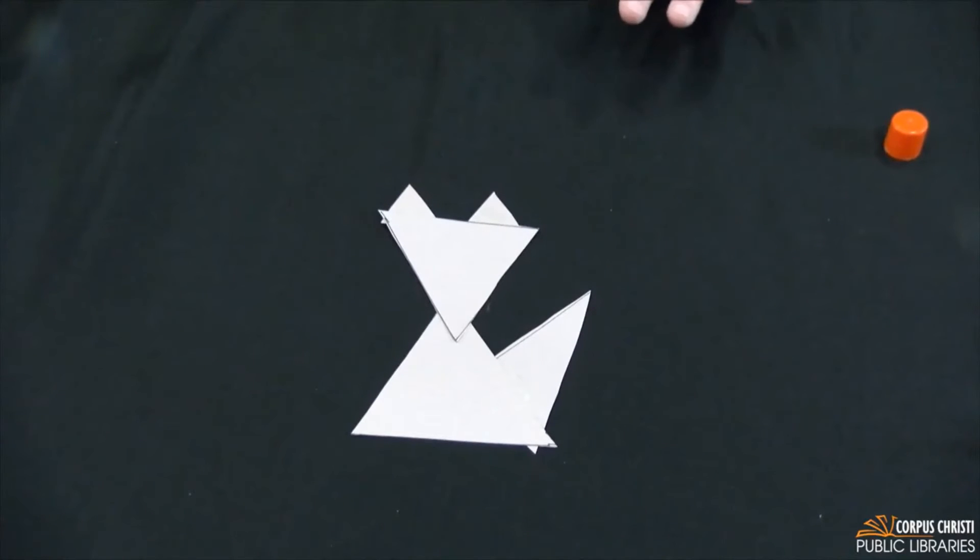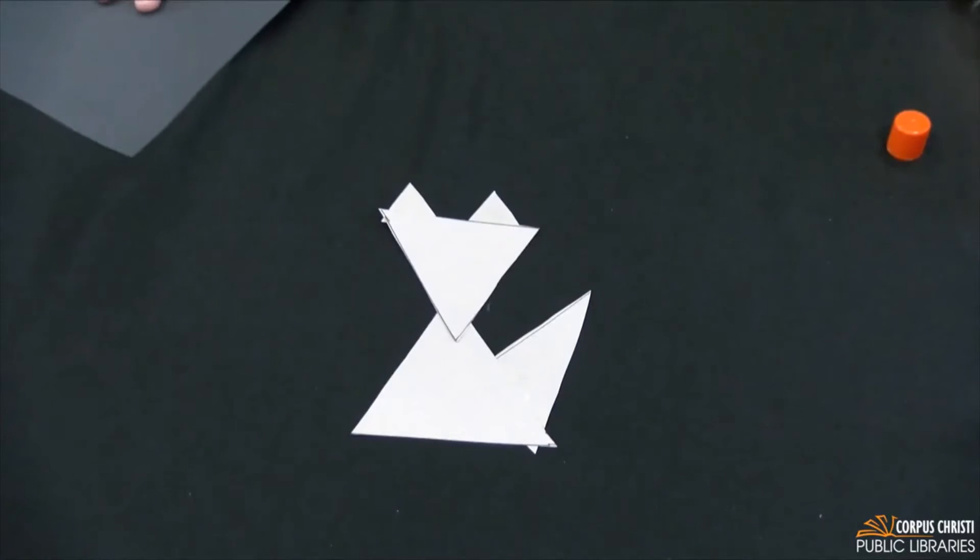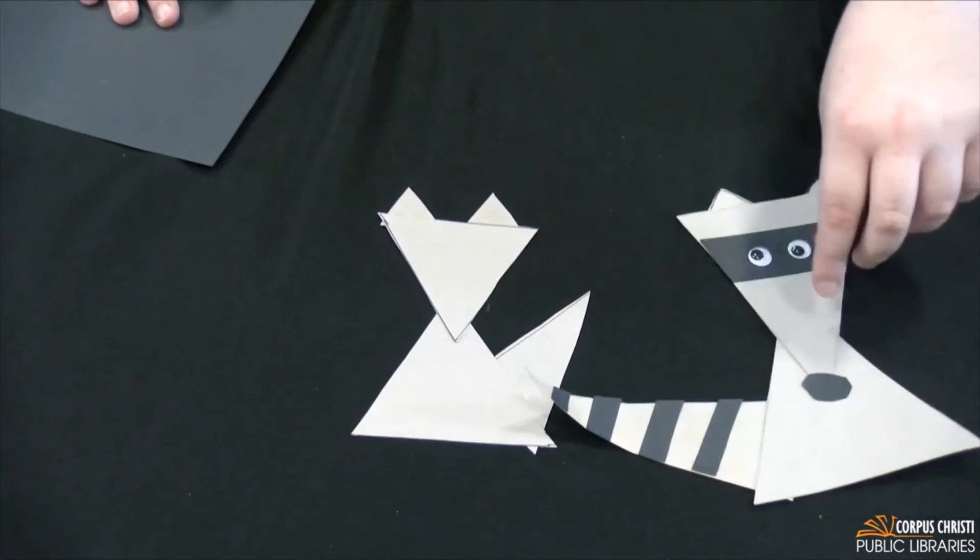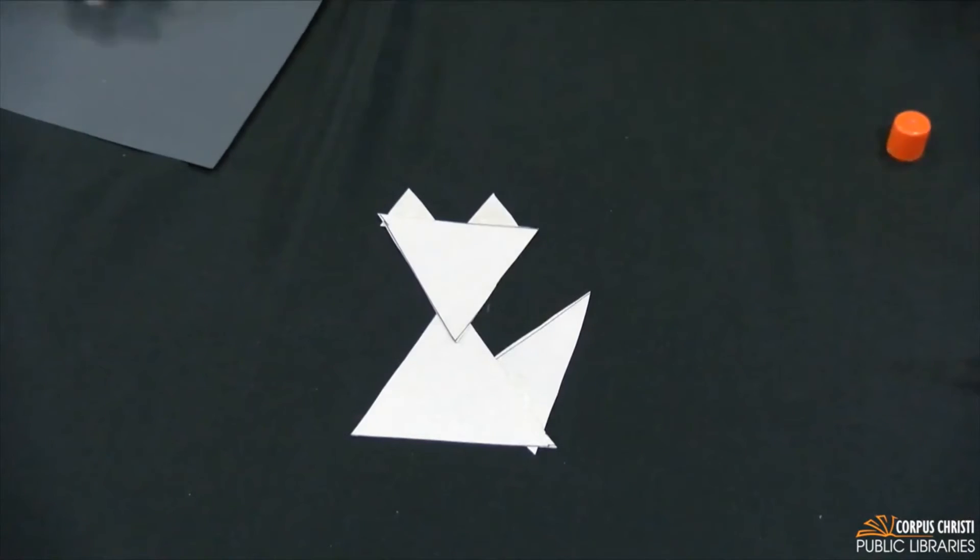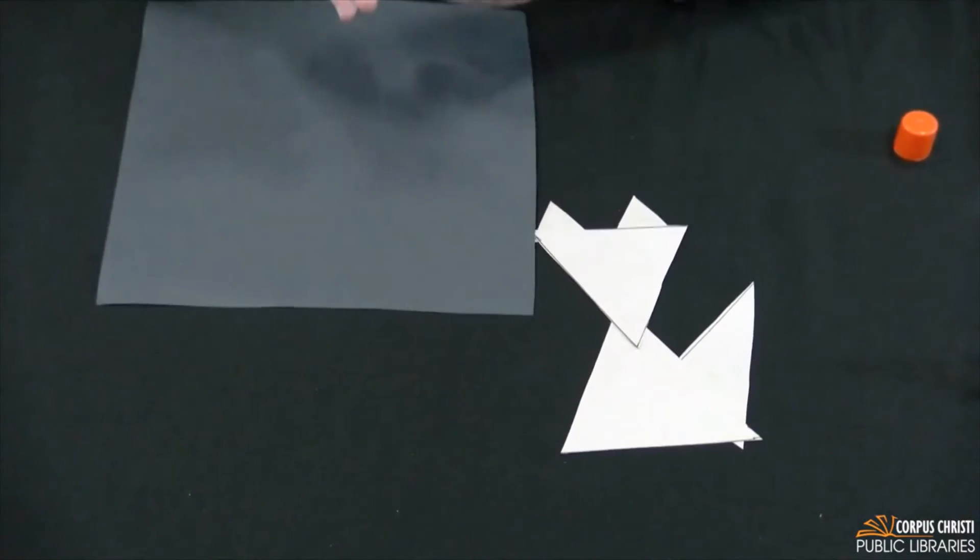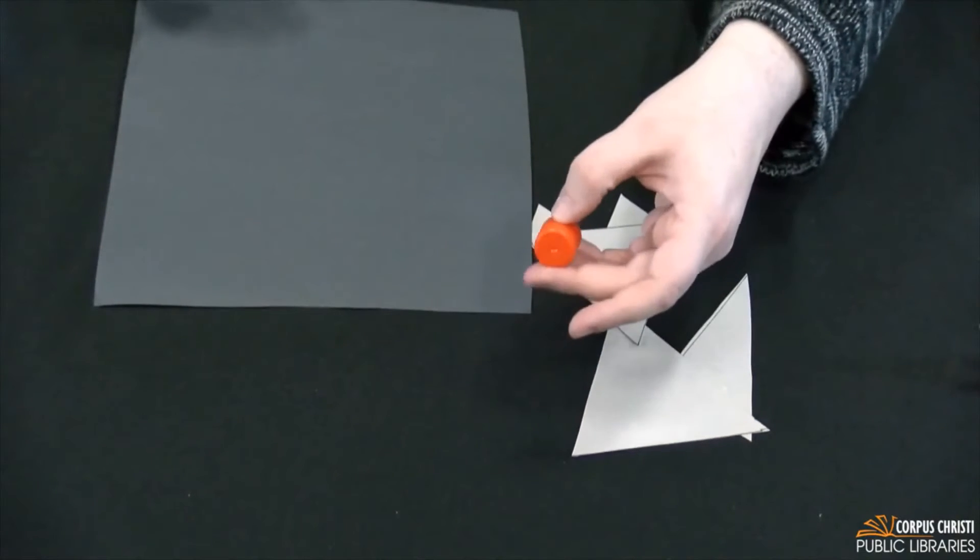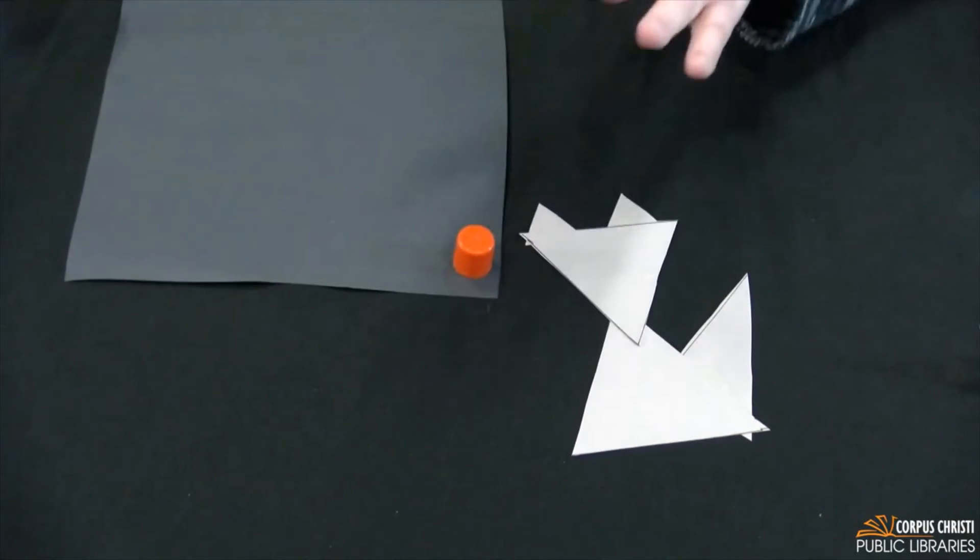And I'm going to take my black paper and get my other shapes that I need. So the first thing I'm going to do is bring my example back. I'm going to make a circle for my nose. So you can freehand your circle. I am going to trace out a circle using the top of my glue stick lid because it's just the size I need.